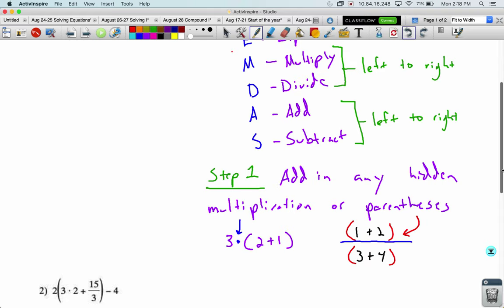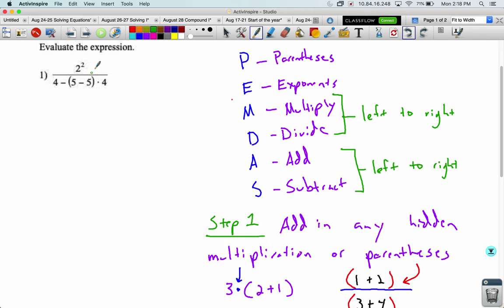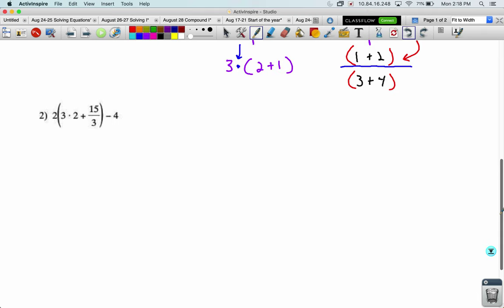Okay, so let's look at problem number one. Is there any hidden multiplication or parentheses? Well, I don't see any hidden multiplication, but I can add a set of parentheses around the whole top and the whole bottom like we just talked about. That fraction is a grouping symbol. Okay.